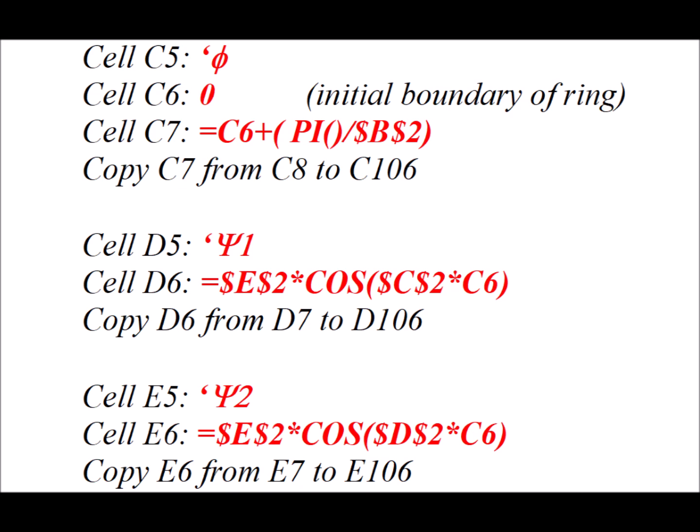In cell D5, we have apostrophe ψ1. That's our first eigenfunction. Cell D6 is the formula equals dollar sign E, dollar sign 2 times cosine of dollar sign C, dollar sign 2 times C6. So the dollar sign E part is the normalization constant. The dollar sign C, dollar sign 2 is the m sub l value for the first function.